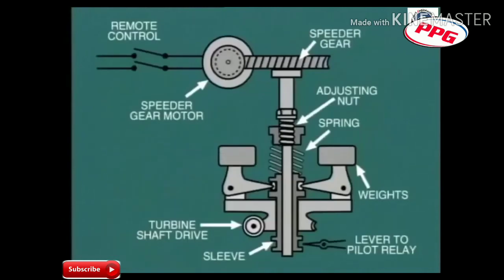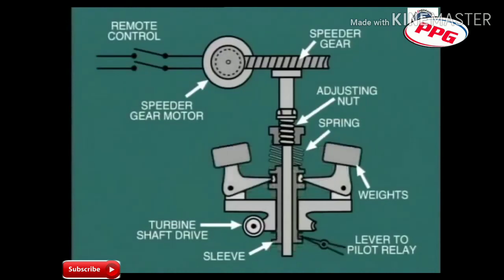Now, let's take a closer look at the governor itself. This mechanical-type centrifugal governor is driven directly from the turbine shaft through a gear drive. As speed increases, the weights fly outward due to centrifugal force and lift the sleeve against the compression spring.